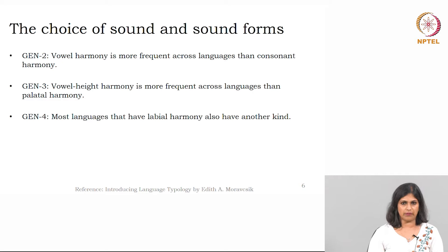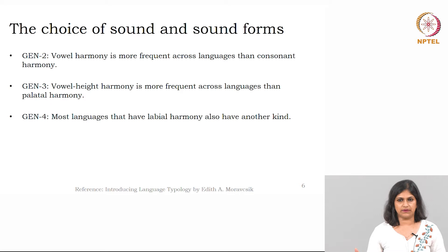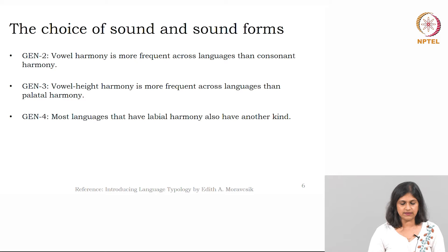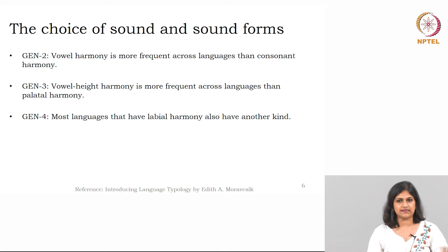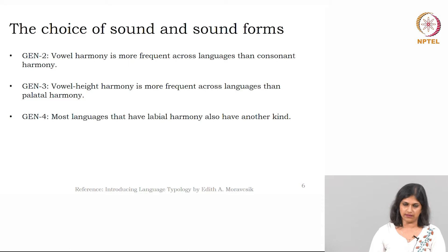Remember the second generalization carefully: if you compare vowels and consonants, it is vowels whose harmony is more frequent across languages than consonant harmony. Consonants might be varied — there could be wide variation among the pronunciation of consonants. But in the phonological segments of world's languages, vowel harmony is found more frequently. These are statistical statements — vowel harmony is more frequent, consonant harmony is less frequent.